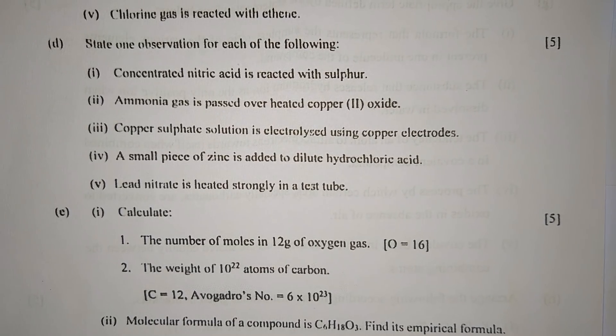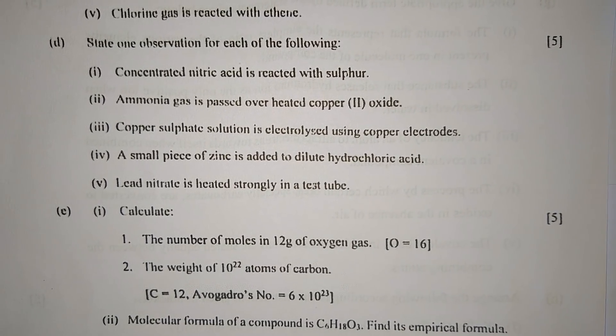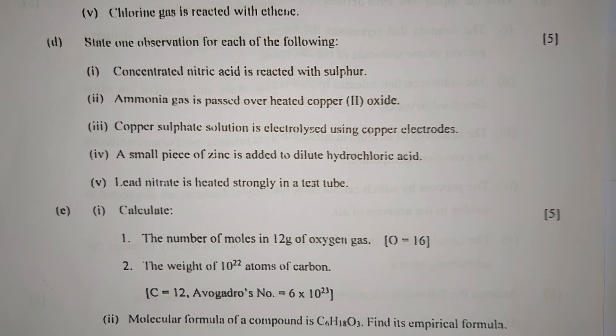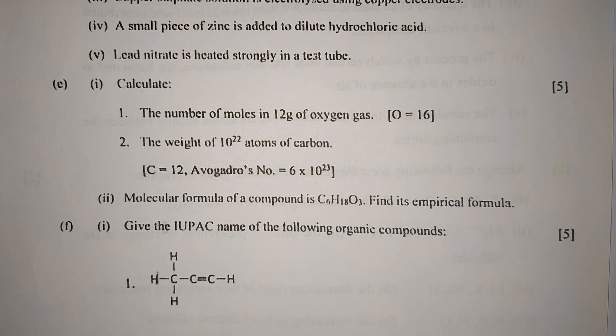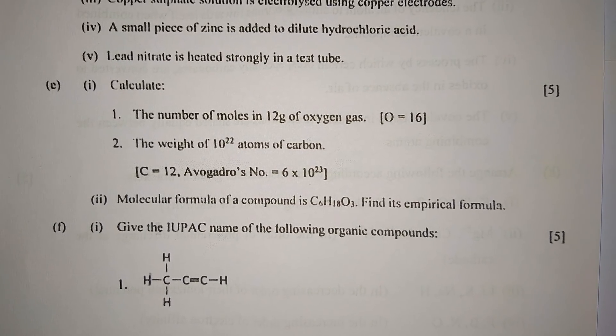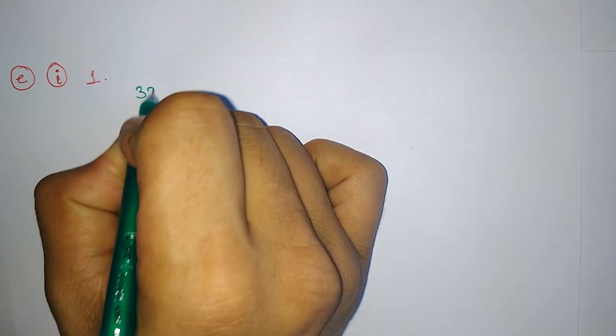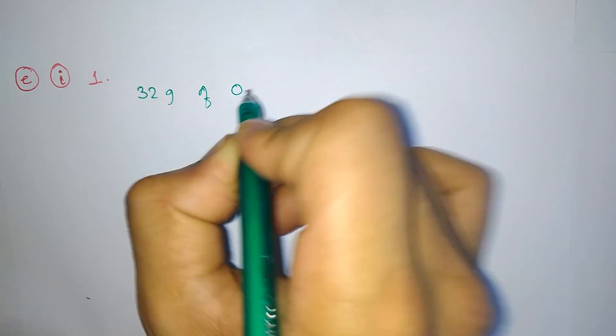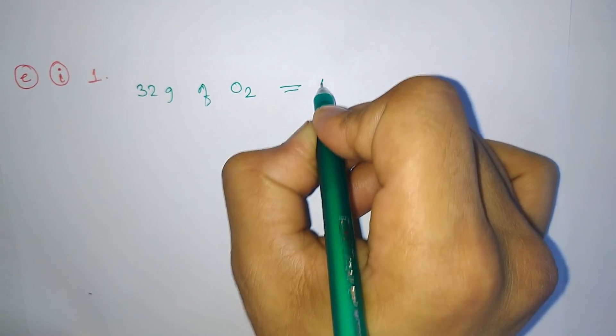Number five: Lead nitrate is heated strongly in a test tube. When lead nitrate is heated strongly in a test tube, yellow solid lead oxide is formed which fuses with the glass.